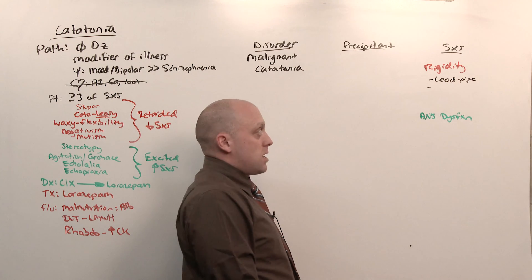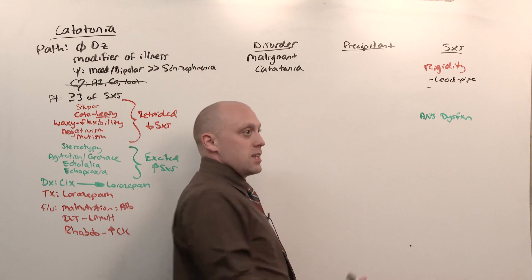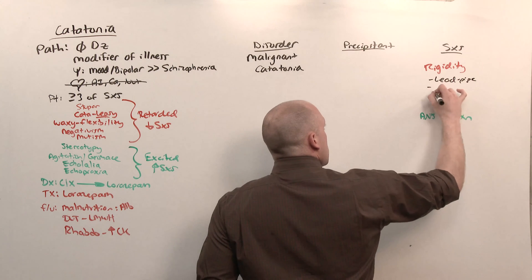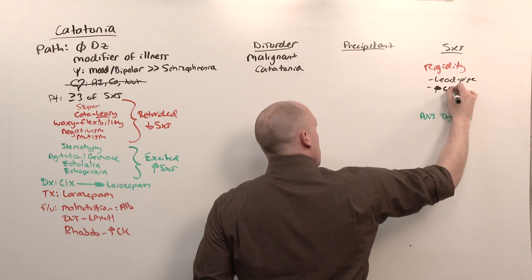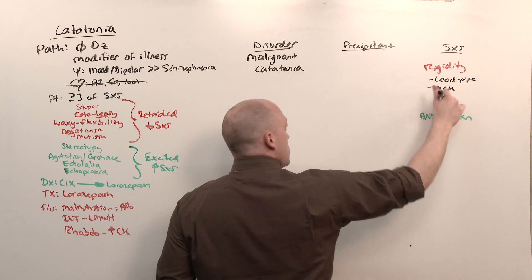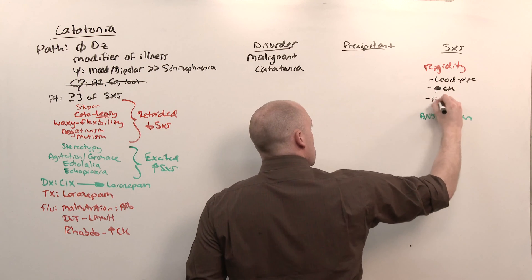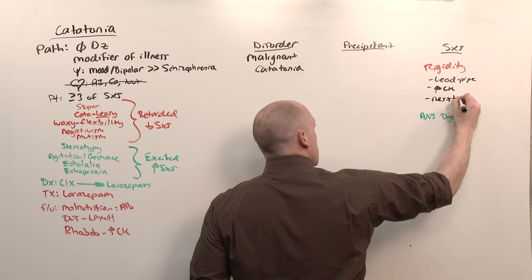In the way of rigidity, what you're going to see is what's described as a lead pipe rigidity. All the muscles are contracted at once, such that the person's basically going to start shaking because they're basically contracting everything at the same time. This rigidity and contraction of the muscle leads to muscle breakdown, which will show in the way of an elevated CK. And they have very strong resistance to movement because they're simply contracting everything.